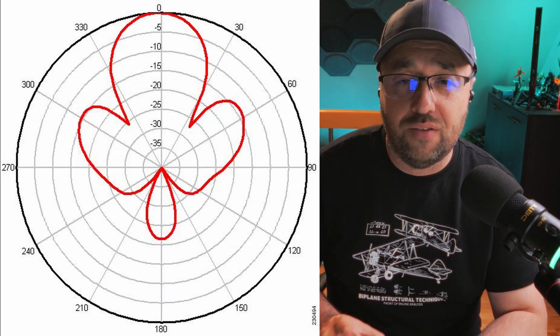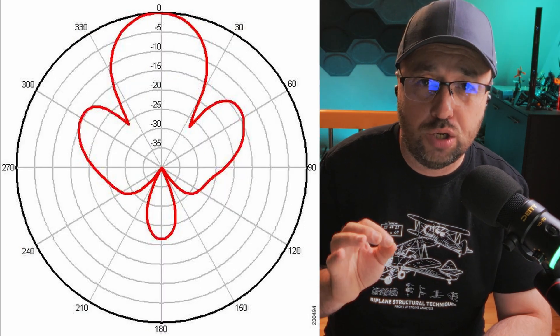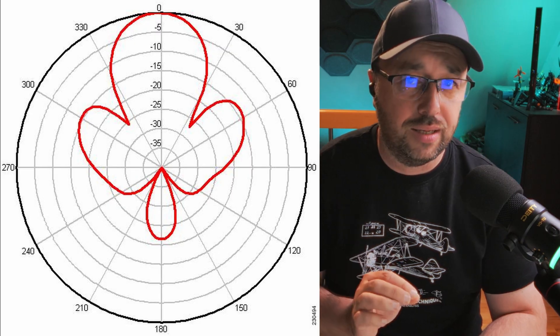That's why we have the radiation patterns of the antenna. If you see an antenna with the gain of 3 dBi, that means there is a direction in which it radiates 3 dBi more than the isotropic antenna.